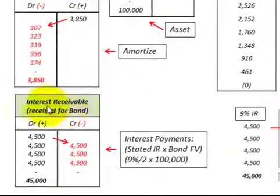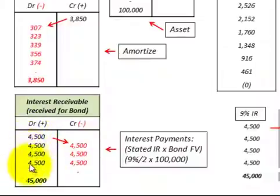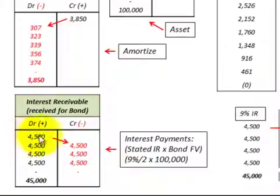Now we look at our interest receivable on this bond. Those are the semi-annual payments that we receive based on the 9% stated rate of interest, or 4.5% per period, times the $100,000 face value, giving us $4,500 for each of those interest payments.